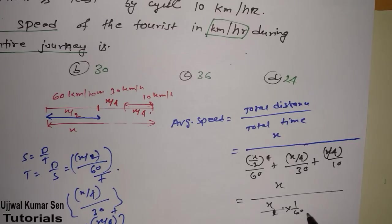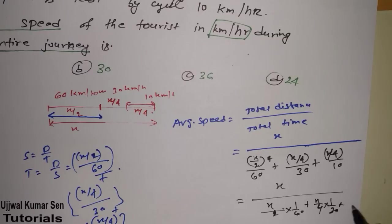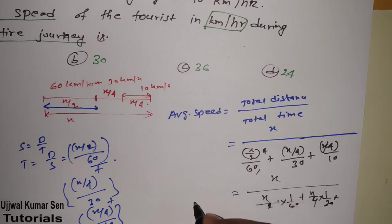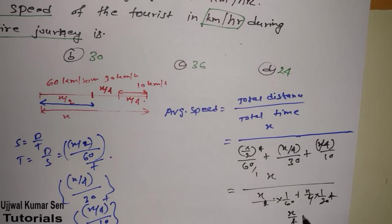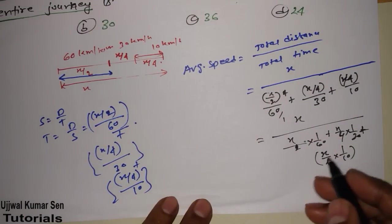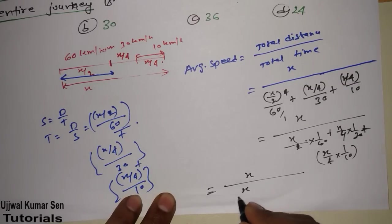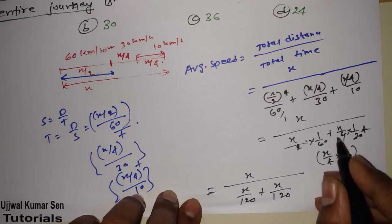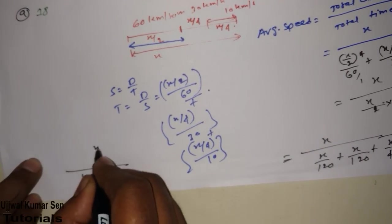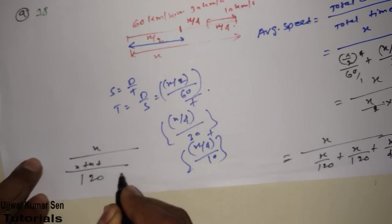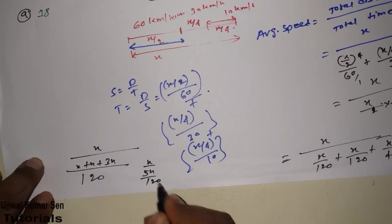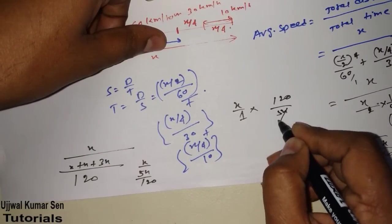Now I take the LCM of 120 to simplify. x/120 + x/120 + 3x/120 = 5x/120. So total time = 5x/120. Now average speed = total distance divided by total time = x ÷ (5x/120) = x × 120/(5x). The x cancels, giving 120/5 = 24 kilometers per hour.